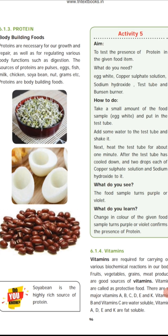Activity 5 is given in your book — the test for presence of protein in a given food item. Take egg white, copper sulfate solution, sodium hydroxide solution, a test tube, and a Bunsen burner. Take a small amount of egg white, put it into the test tube, add some water and shake it. Heat the test tube for one minute. After it cools down, add 2 drops of copper sulfate solution and sodium hydroxide solution. You will observe the food sample turns purple or violet color, which confirms the presence of protein.